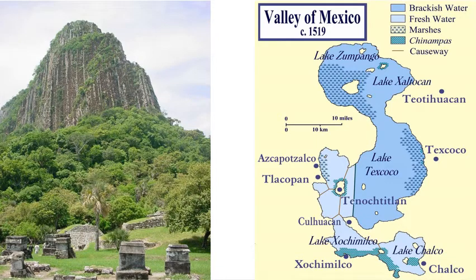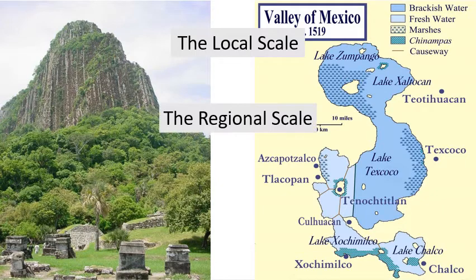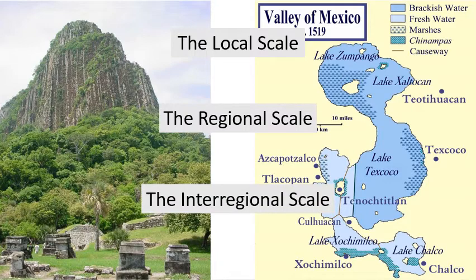We can divide the spatial context into three different categories based on the spatial extent of an area or the distance between points. We can construct many different categories within the general subject of spatial context, but I find this simple three-category division to be useful. By separating the spatial context into three distinct categories, we can better contextualize a variety of cultural processes that often take place at different spatial scales. These three categories are the local scale, the regional scale, and the interregional scale. Although we use distance or area to define these different scales, we don't need to establish rigid boundaries for these different categories.